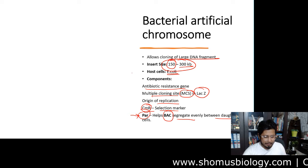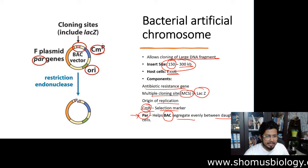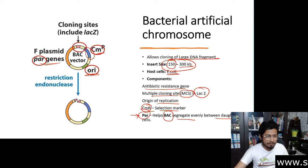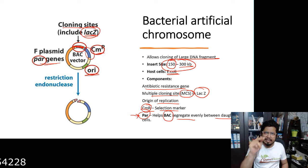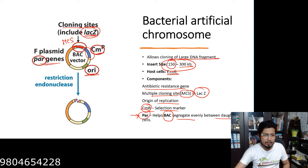Looking at the BAC vector diagram, you can see the CmR resistance gene as the selectable marker, the par genes which allow the BAC to segregate into daughter cells, the origin of replication, and the Multiple Cloning Site placed within the lacZ gene. The lacZ gene placement is important because inserting target DNA into the MCS will disrupt the lacZ gene.